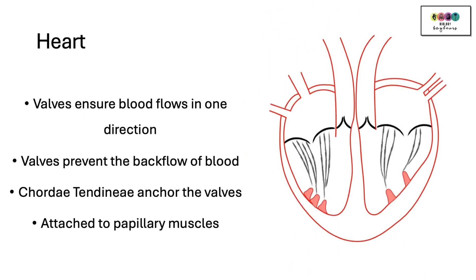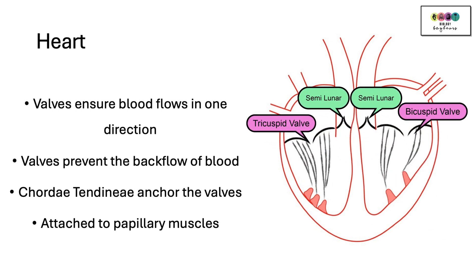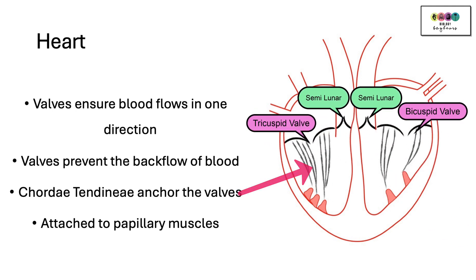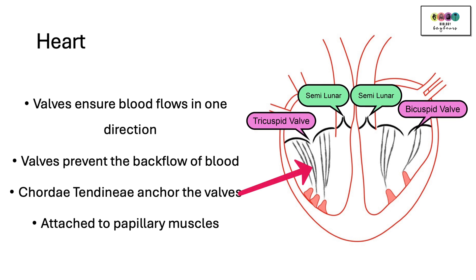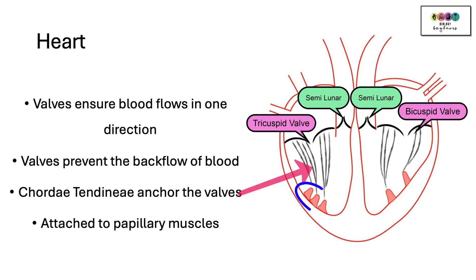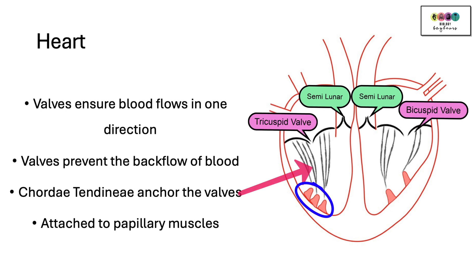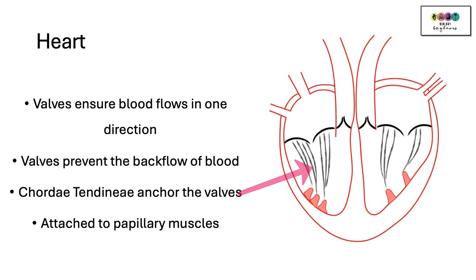The heart has a number of valves. Valves ensure the blood flows in one direction only, so valves prevent the backflow of blood. The chordae tendineae — these are the heartstrings — they anchor the valves and are attached to the papillary muscles, a label that's often forgotten by students and can come up on the exam.